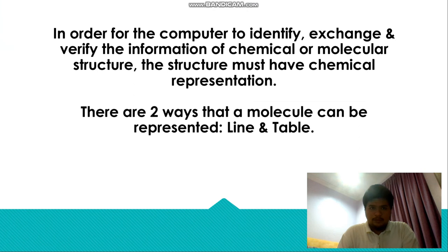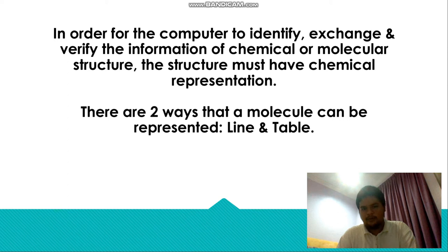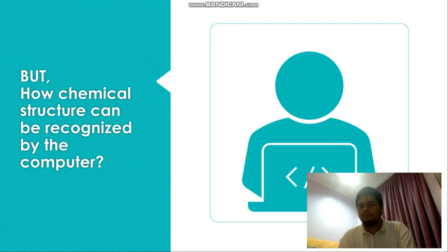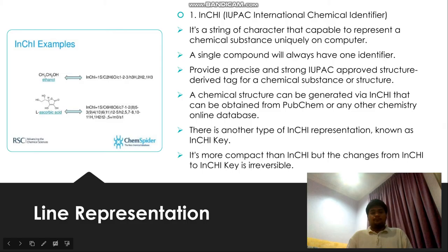But how can a chemical structure be recognized by a computer? In order for the computer to identify, exchange, and verify the information of a chemical or molecular structure, the structure must have a chemical representation. There are two ways a molecule can be represented: line notation and table representation. A structure can also be recognized using CML, which I will discuss before the conclusion.